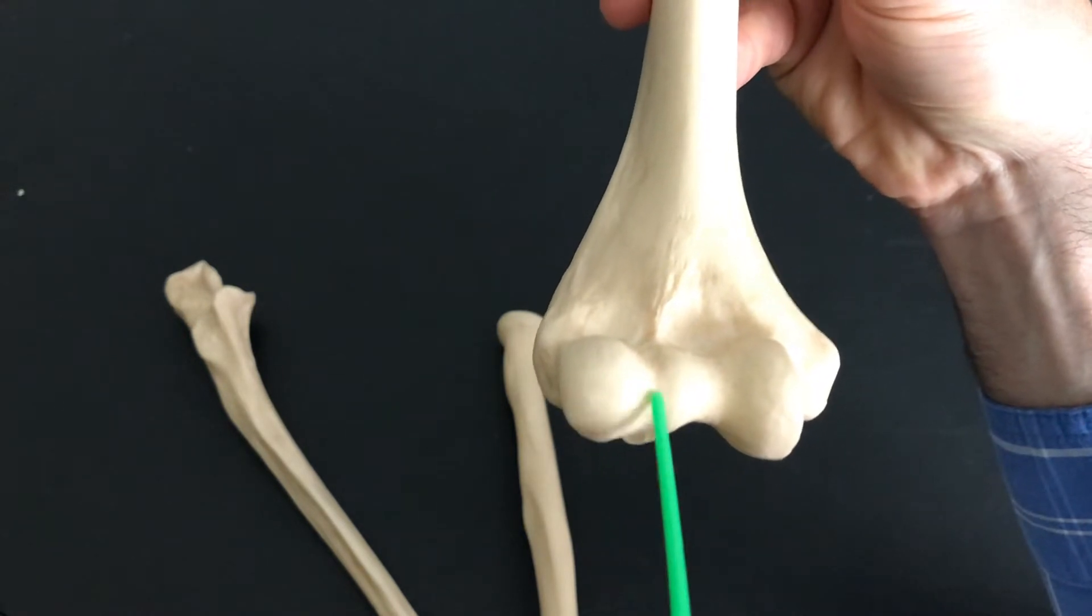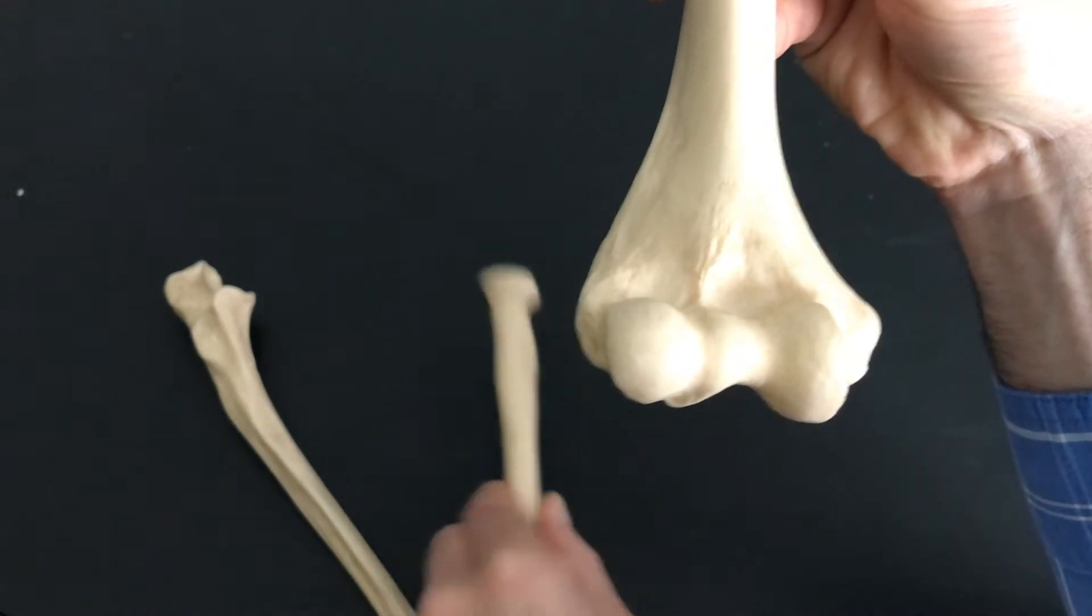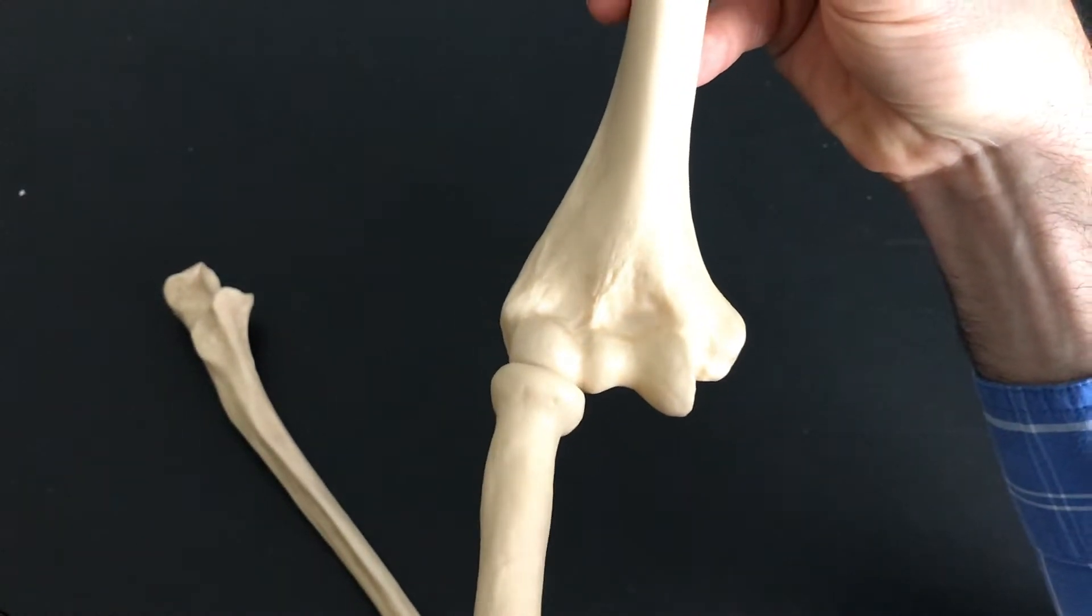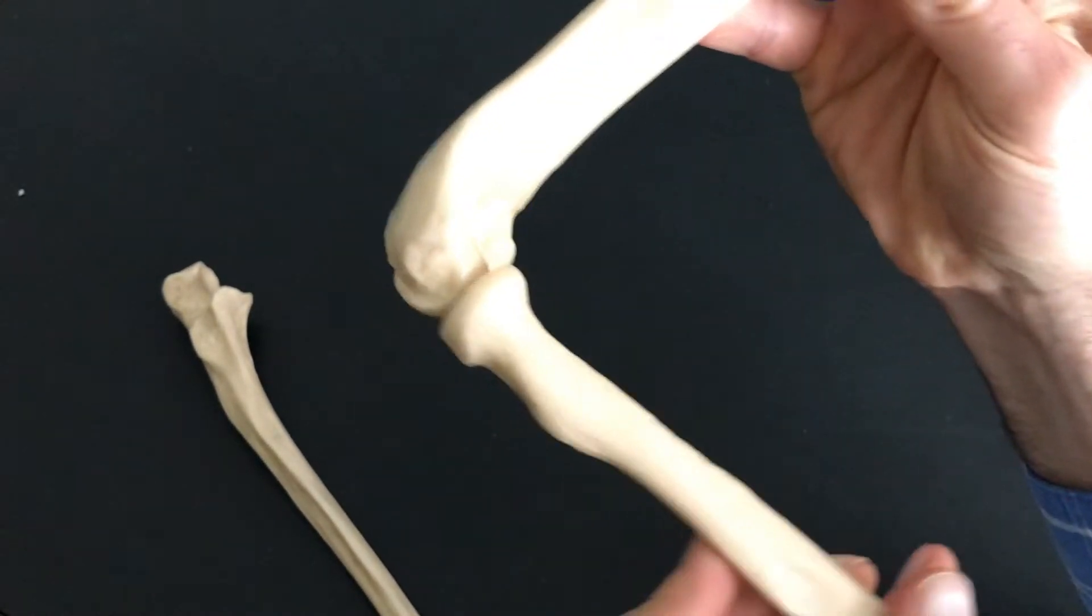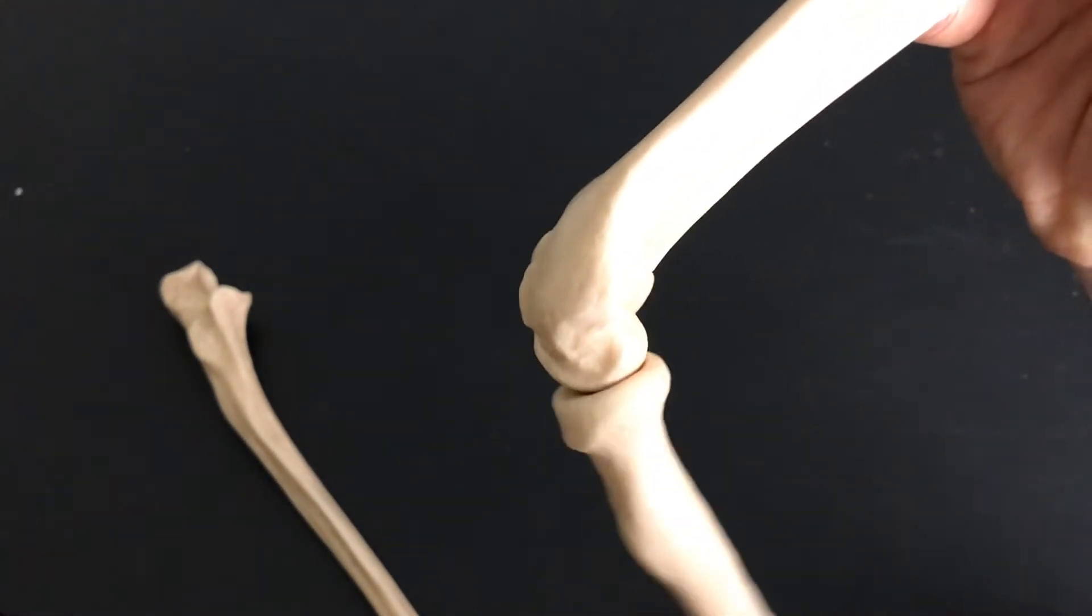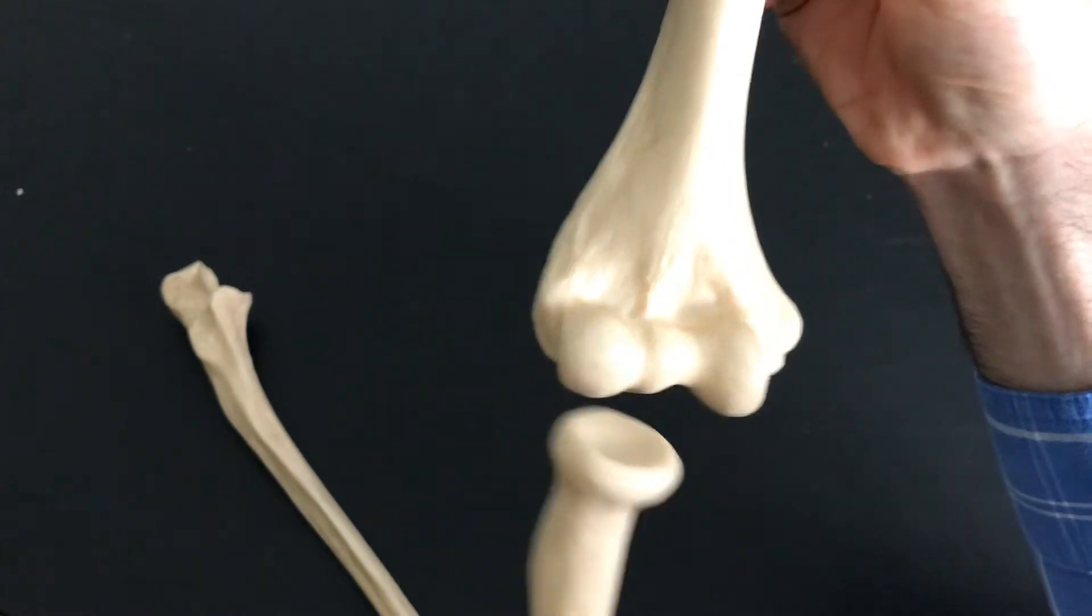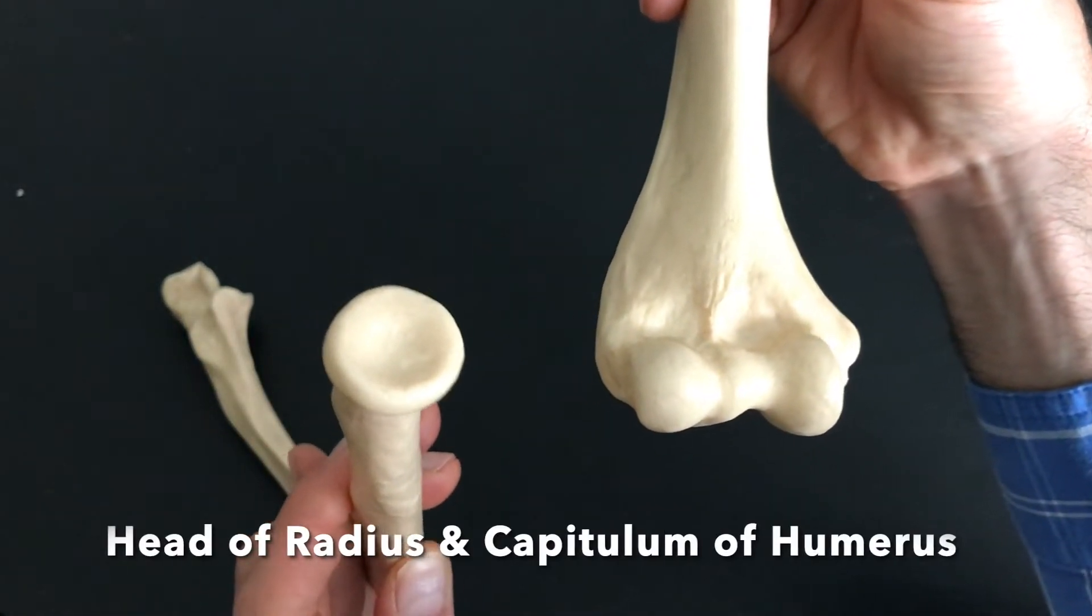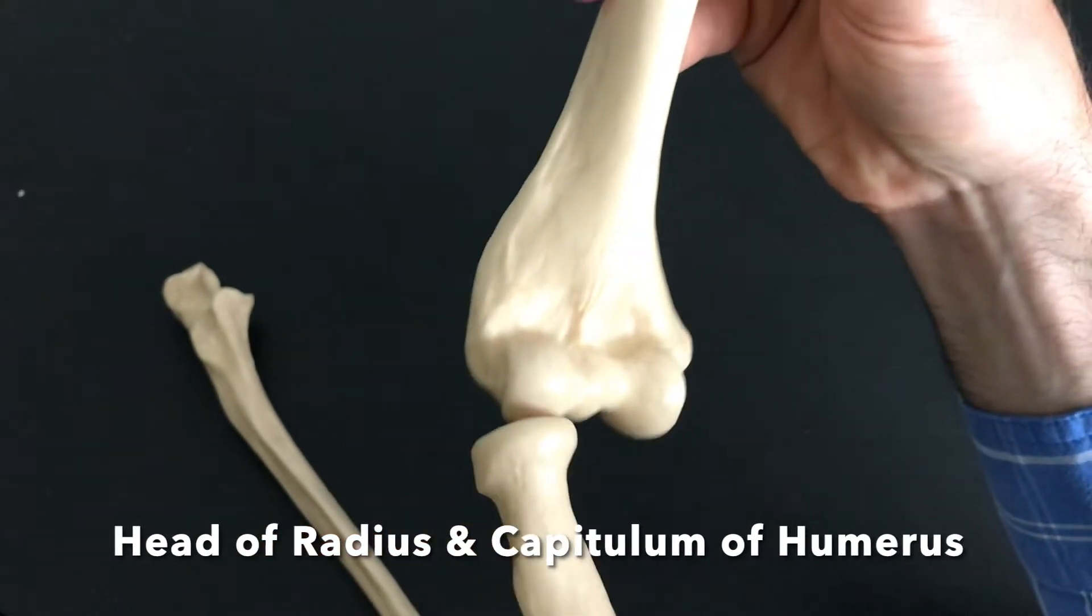The nice round capitulum is where the nice round head of the radius is going to articulate. When you bend your elbow back and forth like this, these two are articulating with one another. The round head of the radius and the capitulum right there.